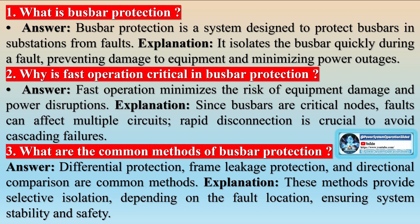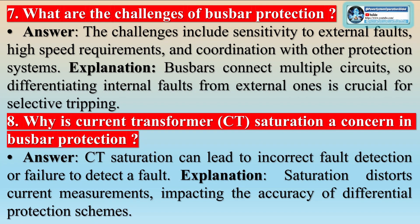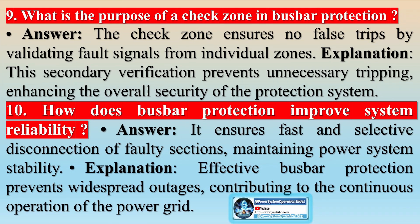Bus differential protection is based on Kirchhoff's first law: the sum of currents entering and leaving a bus must be zero. It protects the bus with multiple feeders by ensuring the sum of incoming currents equals the sum of outgoing currents. An internal (in-zone) fault is indicated if the current sum is not zero. External faults can cause high currents that may saturate CTs (current transformers), leading to false differential currents. CT saturation can cause incorrect relay operation by providing false current magnitudes, so manufacturers use algorithms to maintain relay stability and prevent unnecessary operations during CT saturation.